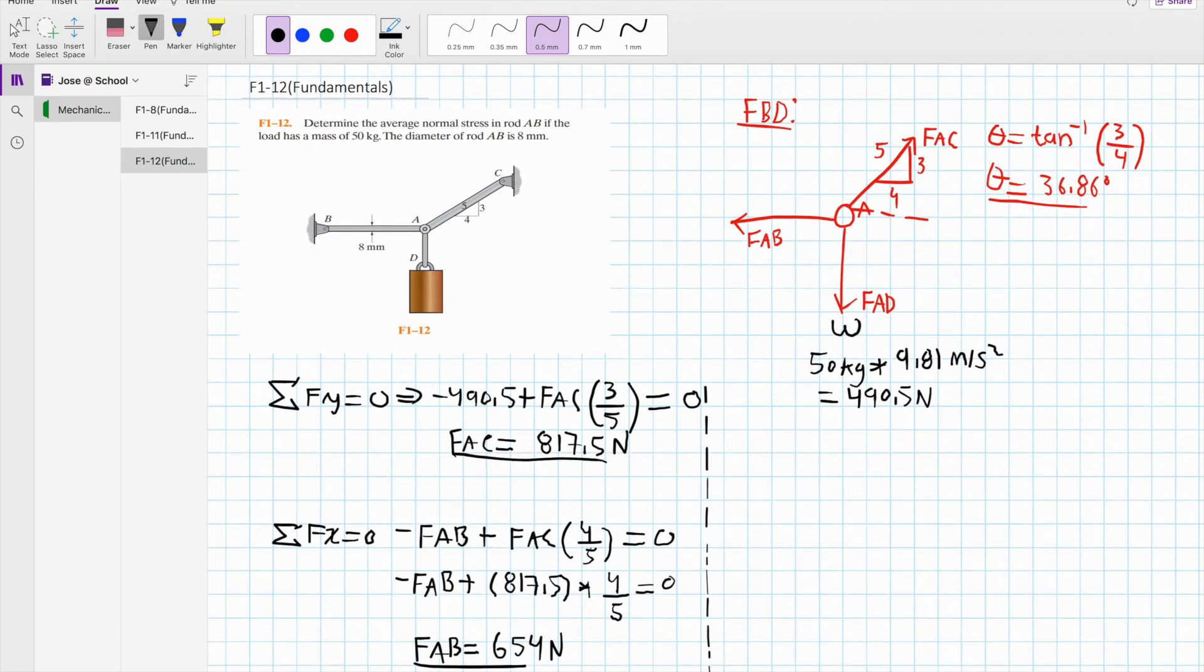The next step is to calculate for your area. The area for AB is a circular cross section, which is A, your area, is equal to pi over 4 times your diameter squared. So we have pi over 4, and your diameter is 8 millimeters. We have to convert this to meters, which is 0.008 meters squared.